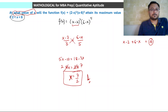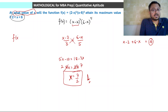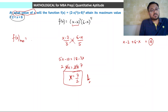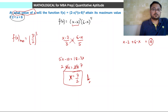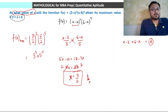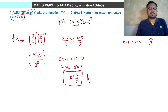At x equals 7 by 2, the maximum value of f(x) is: (7 by 2 minus 2)³ into (6 minus 7 by 2)² which is (3 by 2)³ into (5 by 2)⁵, giving 3³ into 5⁵ divided by 2⁸. This is the maximum value of the function f(x).